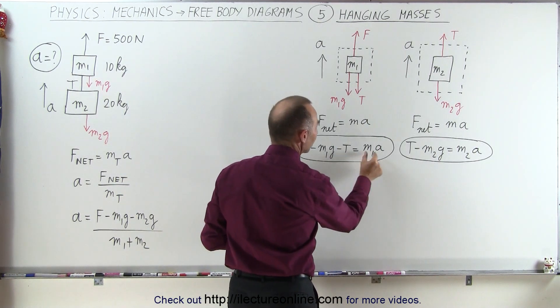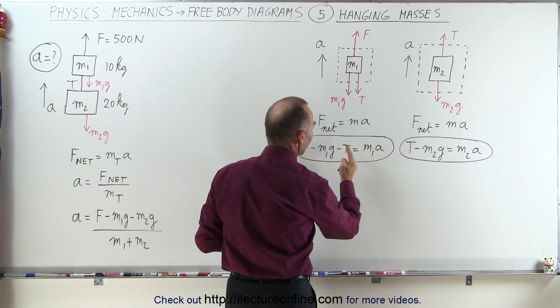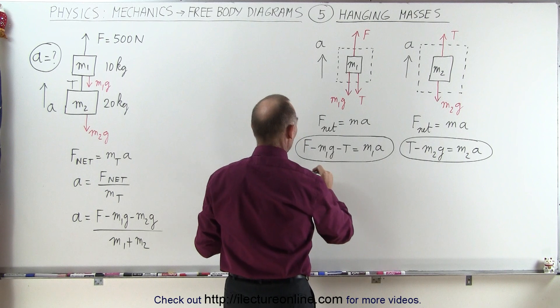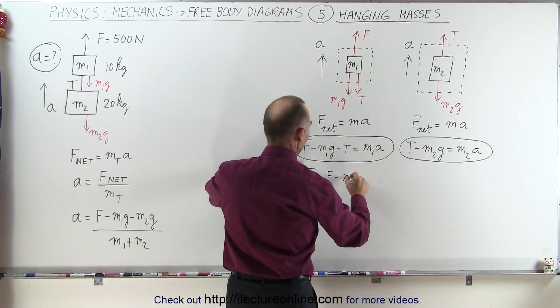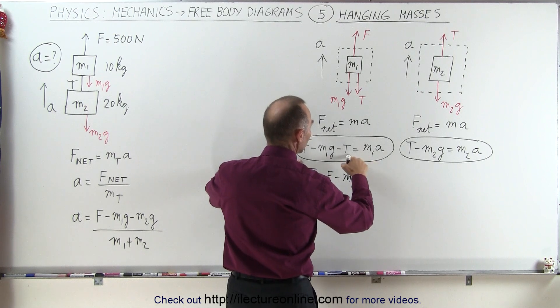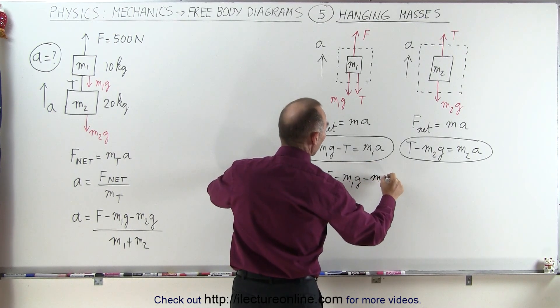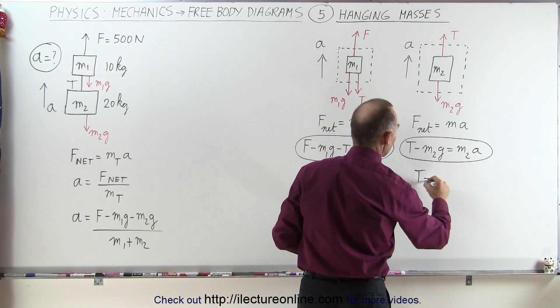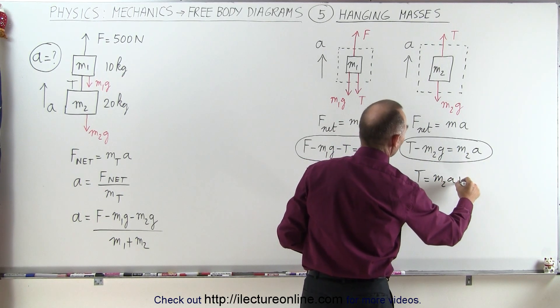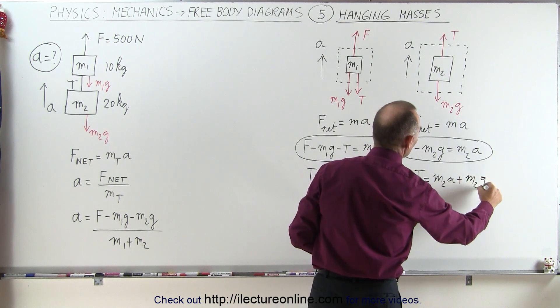So the first one we move the t over to the right side, m1 a to the left side, we switch the equation around, we get t is equal to f minus m1 g, and when we bring this across it becomes minus m1 a. On this equation we move this to the right side, we get t is equal to m2 a plus m2 g.